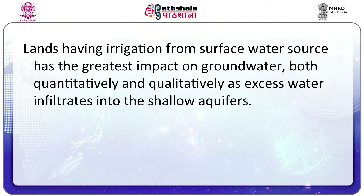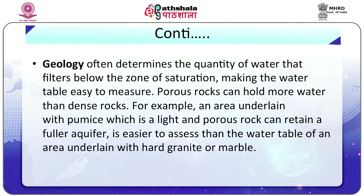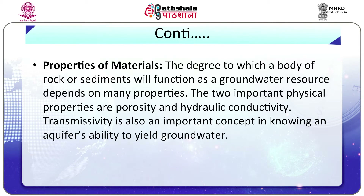Lands having irrigation from surface water sources have the greatest impact on groundwater both quantitatively and qualitatively, as excess water infiltrates into shallow aquifers. Geology often determines the quantity of water that filters below the zone of saturation, making the water table easy to measure. Porous rocks can hold more water than dense rocks; for example, an area underlain with pumice — a light and porous rock — can retain a fuller aquifer and is easier to assess than an area underlain with hard granite or marble. The degree to which a body of rock or sediments functions as a groundwater resource depends on many properties. The two important physical properties are porosity and hydraulic conductivity. Transmissivity is also an important concept in knowing an aquifer's ability to yield groundwater.